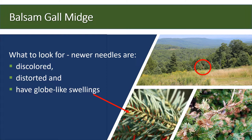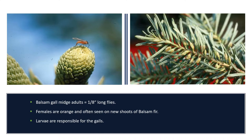A balsam gall midge. Midge adults begin laying eggs early in the spring. These galls — globe-like swellings near the base of the needles — are the result of the larvae feeding within the gall. The gall can be seen from June into October. Balsam gall midge adults are small, 1⅛ inch long flies. The females are orange and often seen on new shoots of balsam fir. They lay eggs under the scales of these new shoots or between the needles.